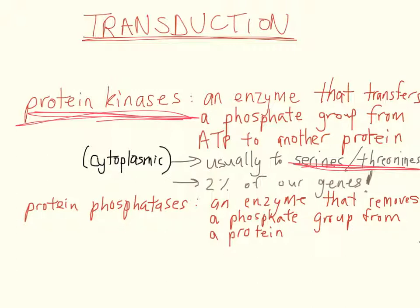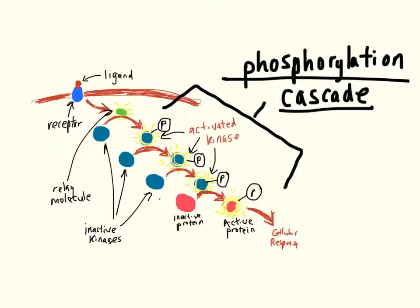Protein phosphatases are essentially the opposite of protein kinases. They remove phosphate groups from a protein. Oftentimes in transduction, we'll have a phosphorylation cascade happening, where there are a series of phosphorylation events happening one by one.